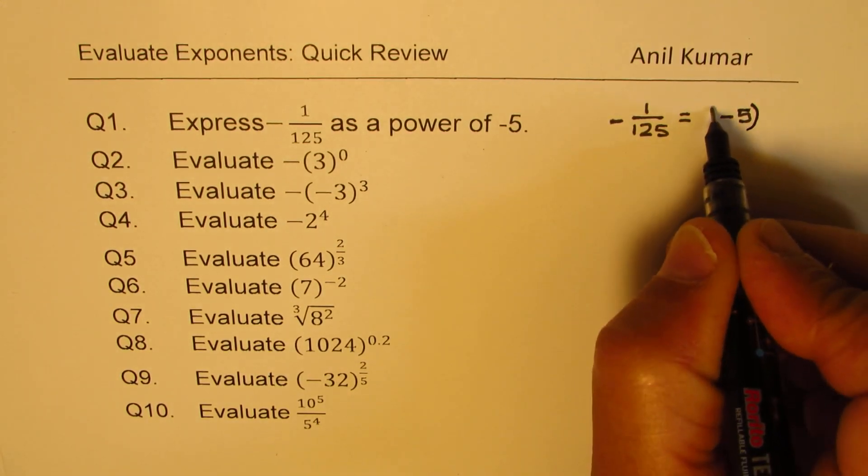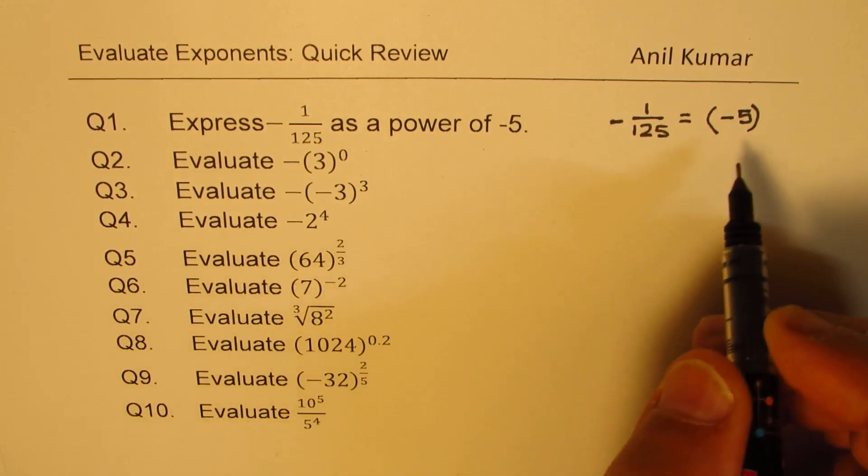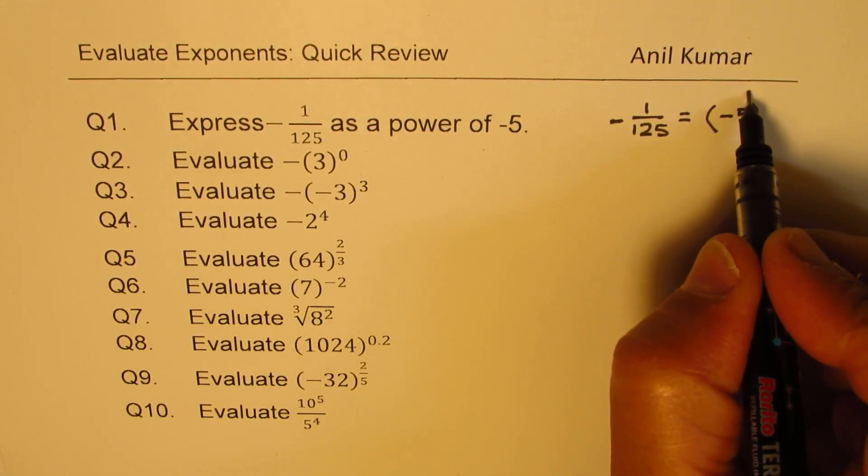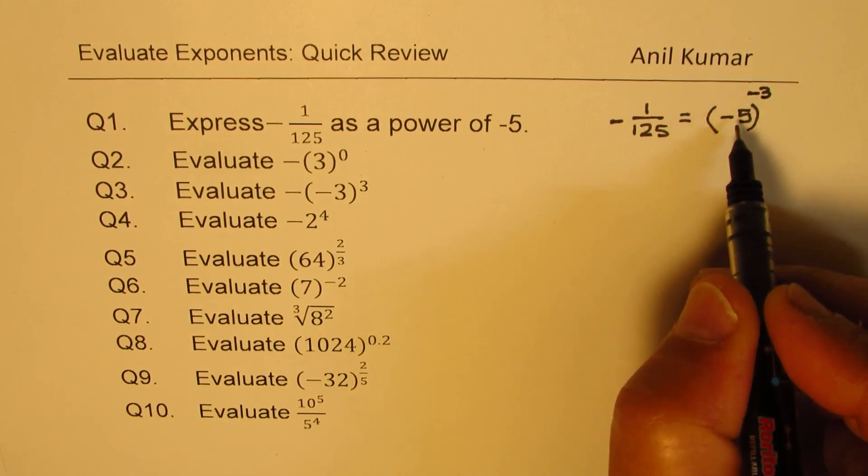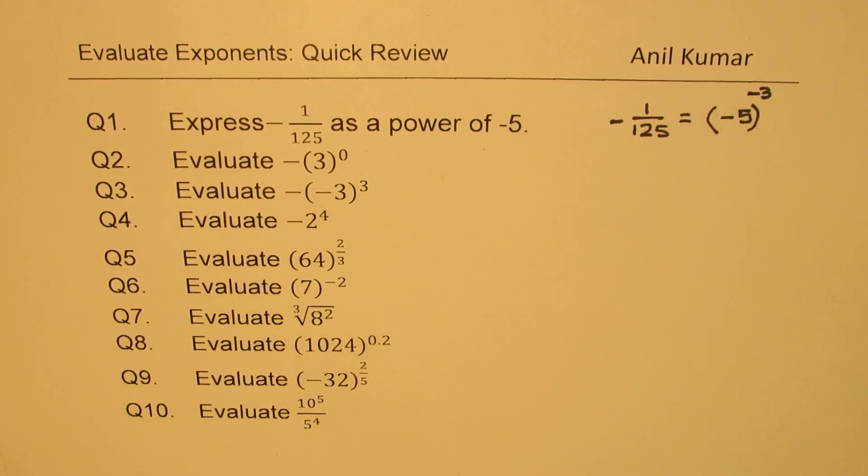Since 1 over 125 is in the denominator, we could write minus 1 over 125 as equal to minus 5 to the power of what? 5 cubed is 125. Now we could do minus 3, right? So minus will make it 1 over 125, and odd power will be negative. So that is the right answer.